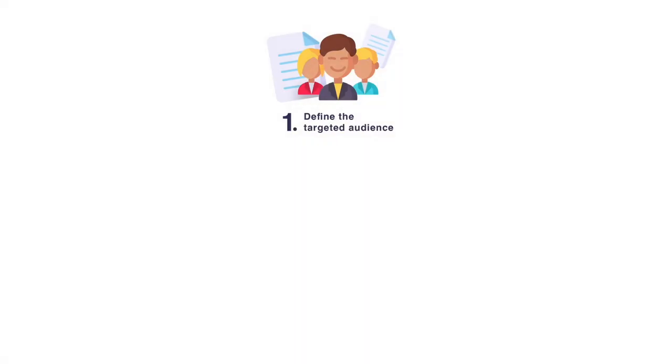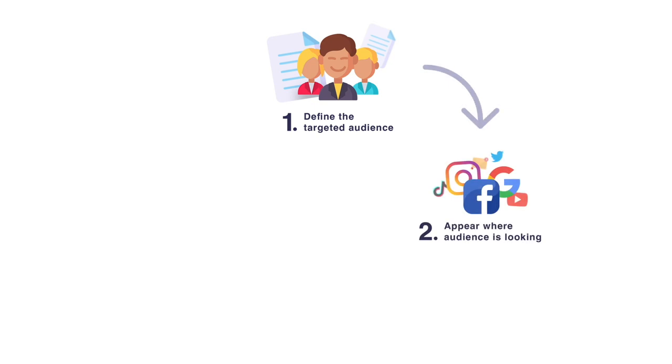The second step is to appear where the target audience is looking for that specific product. For example, if you are selling headphones, will your target audience look for it on Google? Probably. On Amazon? Of course — they may go there and search for headphones and even buy one. But those target audience probably won't go on TikTok and search for headphones. Knowing where they will look is extremely important, because when you know this you can be prepared — when they're looking for that product, you're there and ready to convince them.